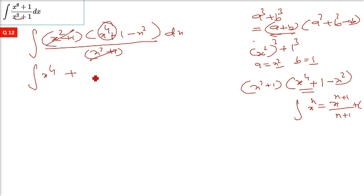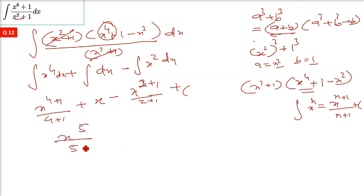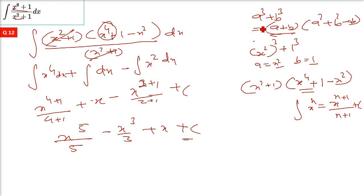After cancellation, we integrate x raised 4, plus 1, minus x squared. Integration of x raised 4 is x raised 5 by 5; integration of dx is x; and minus integration of x squared is minus x cubed by 3. Writing in descending order of powers: x raised 5 by 5, minus x cube by 3, plus x, plus constant of integration. This is the final solution.